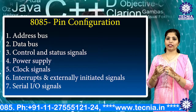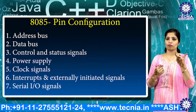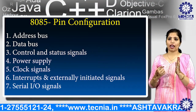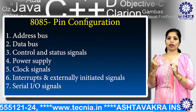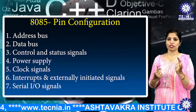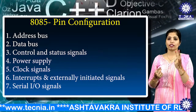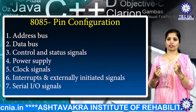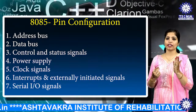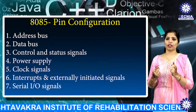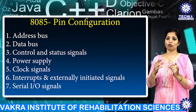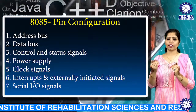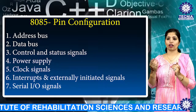The fourth pin configuration group is power supply. There are two power supply signals: VCC and VSS. VCC indicates the +5V power supply, whereas VSS indicates the ground signal.